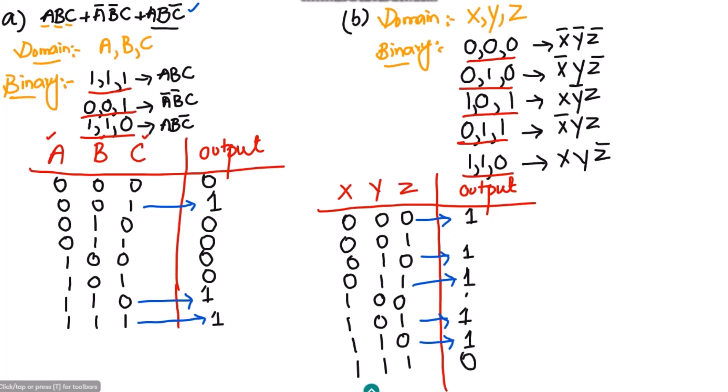For all other rows I write zeros. This is the truth table for the expression in part B, generated from the standard SOP form. That's it for today — we discussed how to draw a truth table from a given standard SOP expression. I hope it is understandable. With more examples and questions I will see you in the upcoming video. Take care of yourself and I will see you soon.